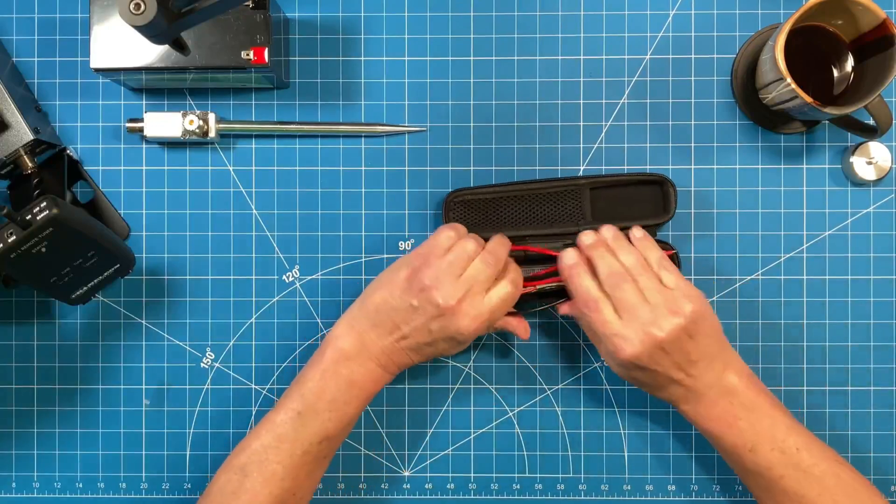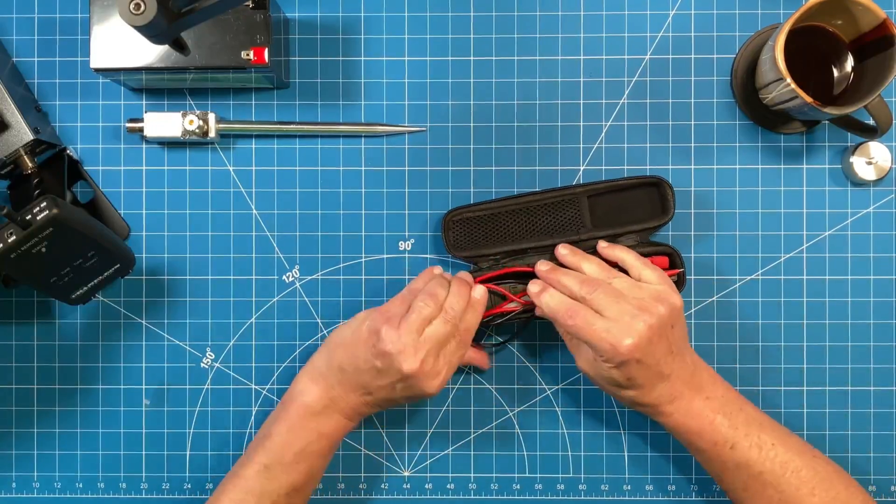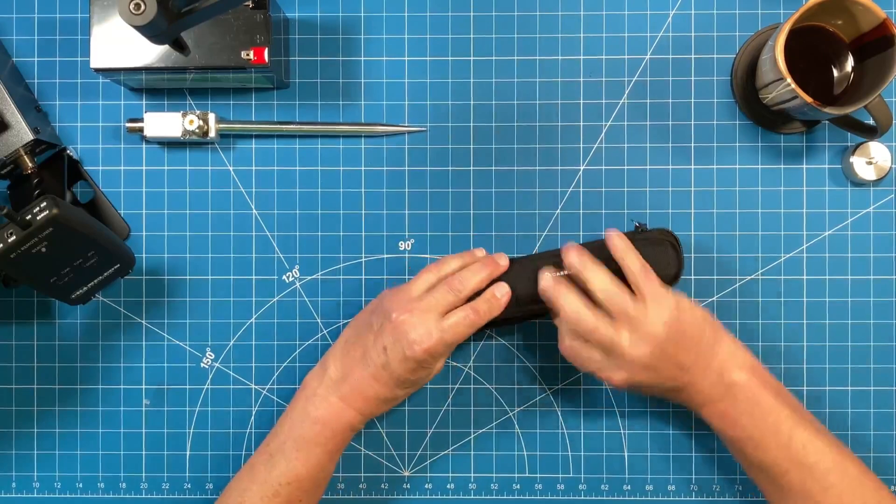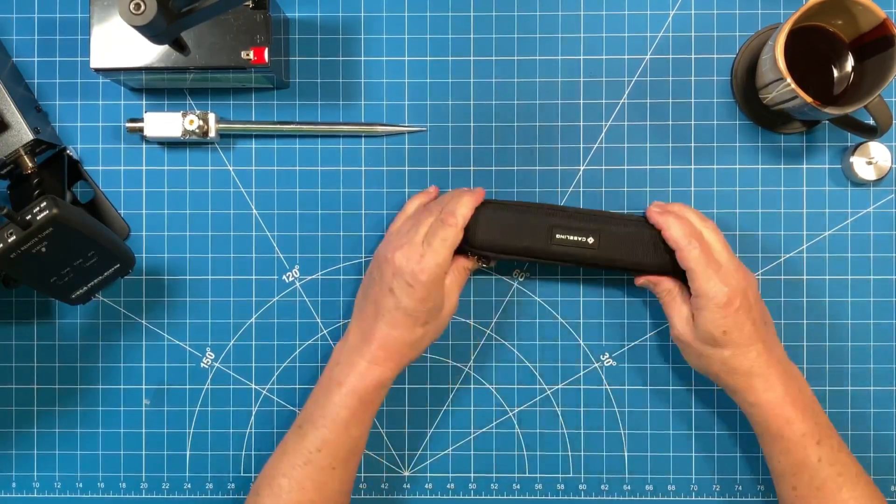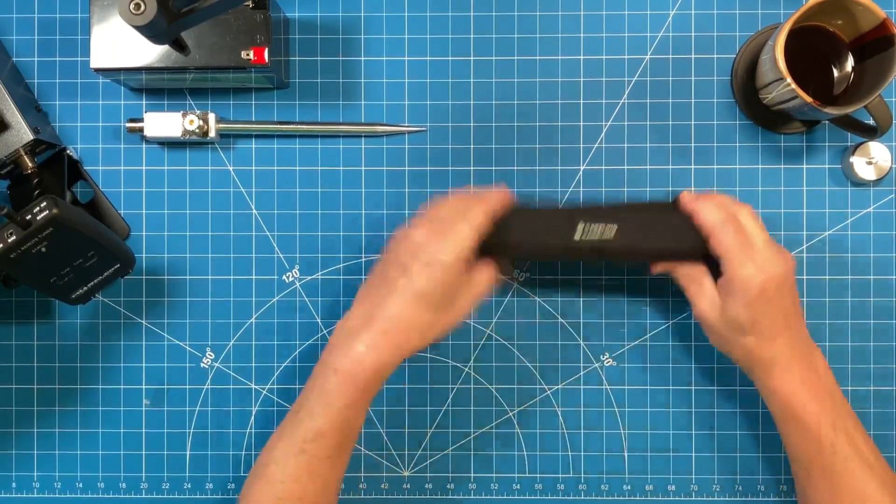So here is a Caseling case that perfectly fits this multimeter. Orient your multimeter face down so the screen is protected. And then you can take your probe connectors and orient them down in that little gap. And now here you have a perfectly good case to carry your gear.